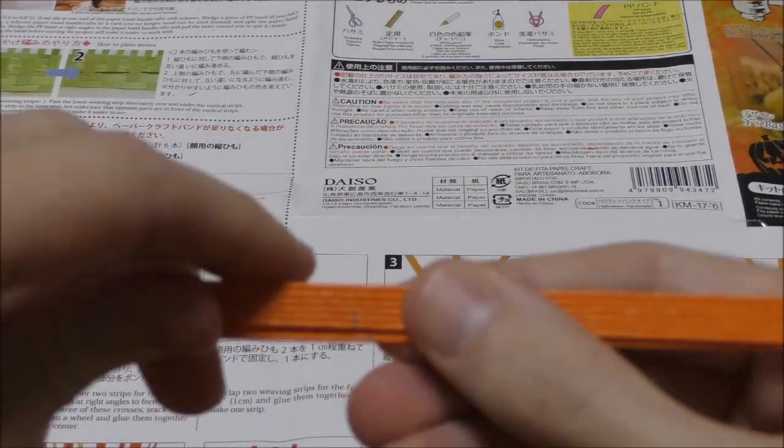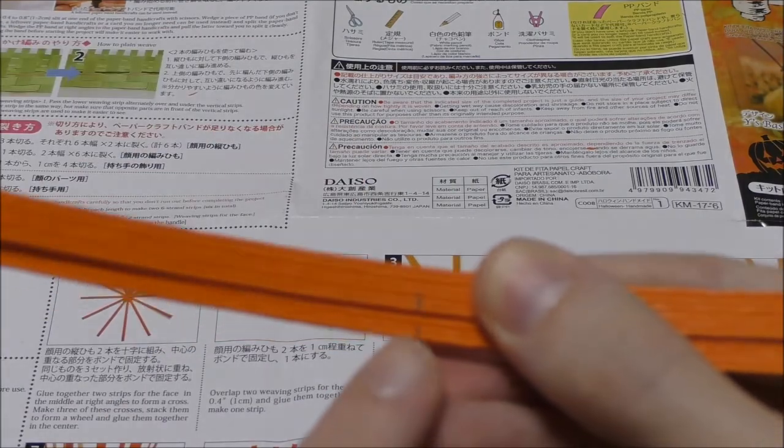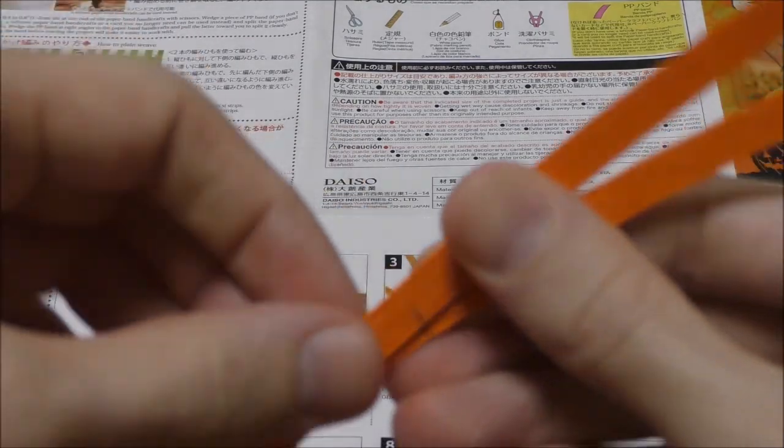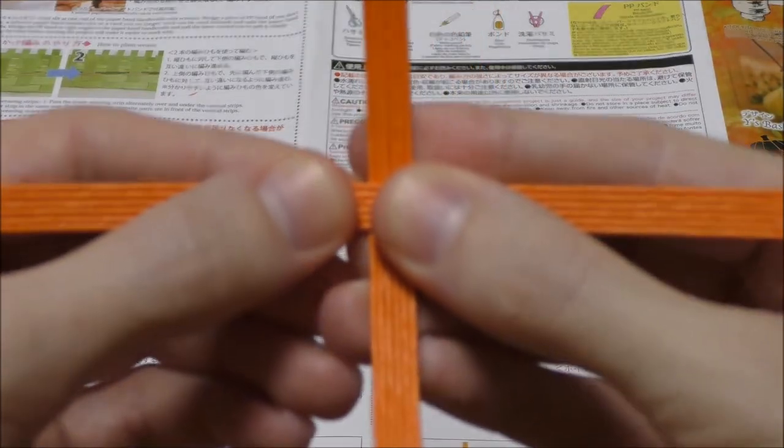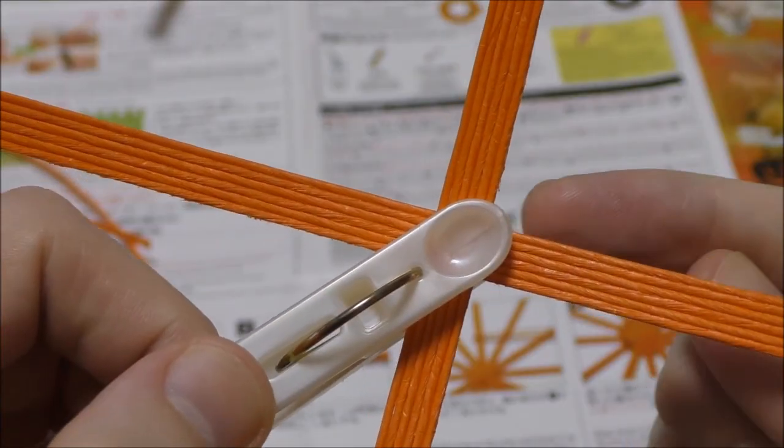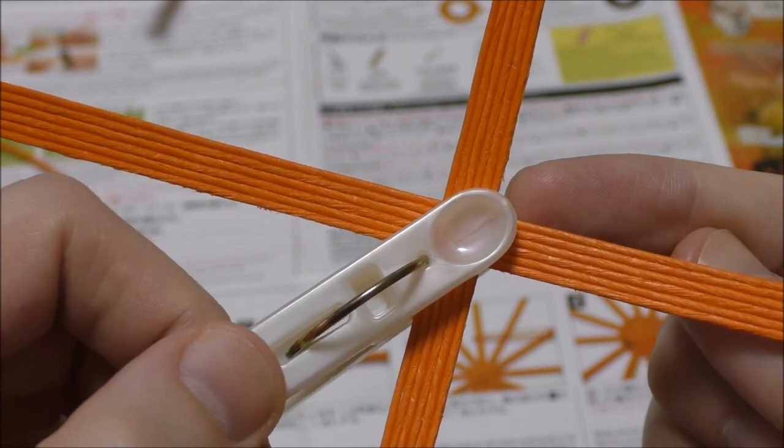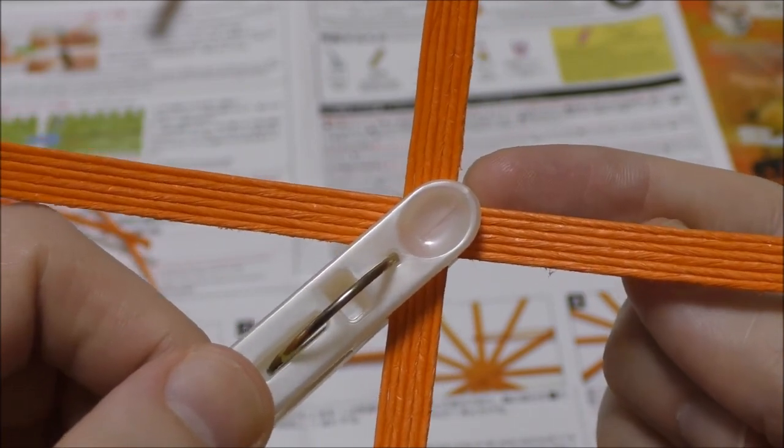Now you're going to have to measure the 15cm line on each one and glue them to create three crosses like this. I've decided to use a plastic clothes peg just to hold these in place while we wait for the glue to dry.